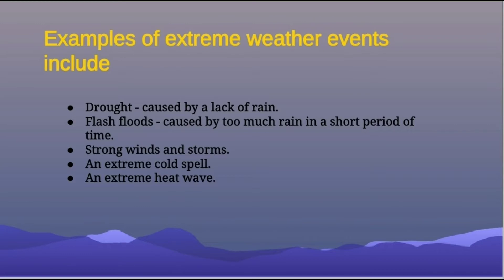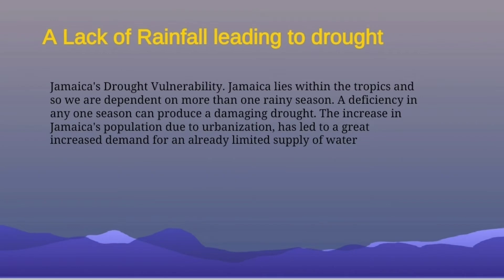Now I'm going to speak about some case studies specifically in Jamaica. The first one is a lack of rainfall leading to drought. Jamaica's drought vulnerability: Jamaica lies within the tropics, so we are dependent on more than one rainy season. The tropics are hot, the sun is overhead, we are near the equator — so we always need rainy seasons. A deficiency in any one season can produce a damaging drought.